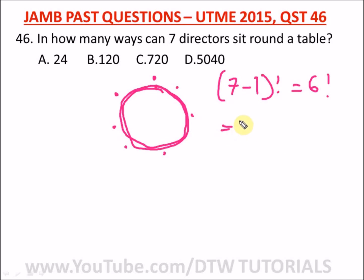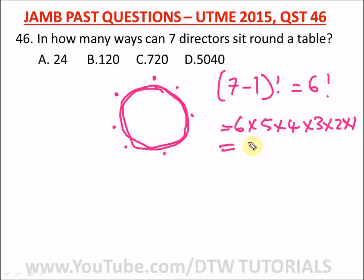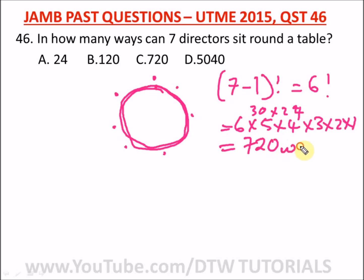Six factorial is six times five times four times three times two times one. Six times four is 24, and six times five is 30, so we have 30 times 24, which gives us 720 ways. The correct option is option C.